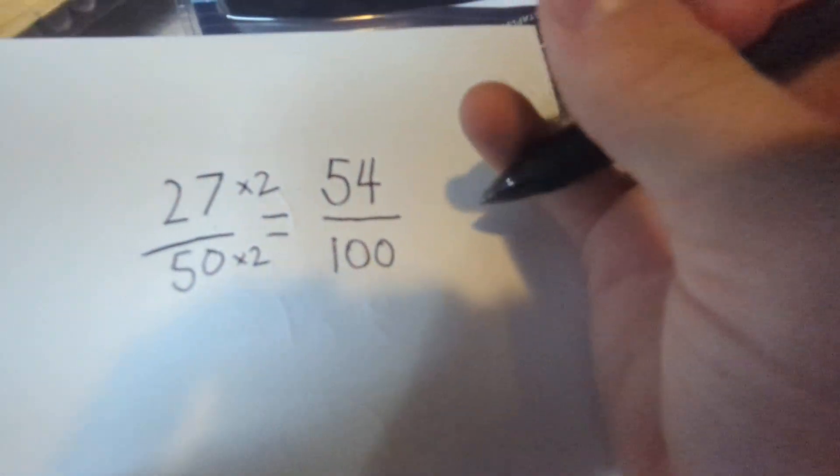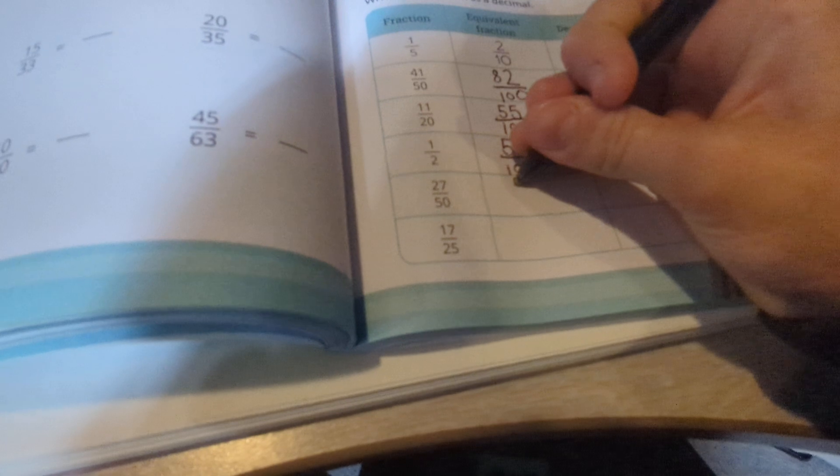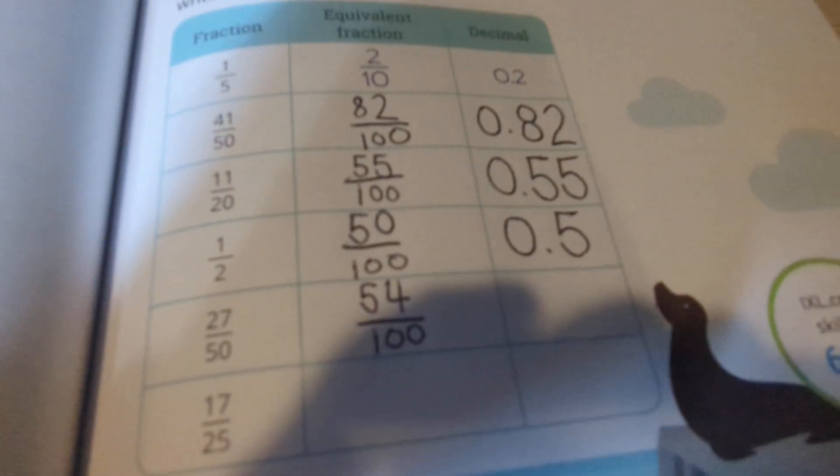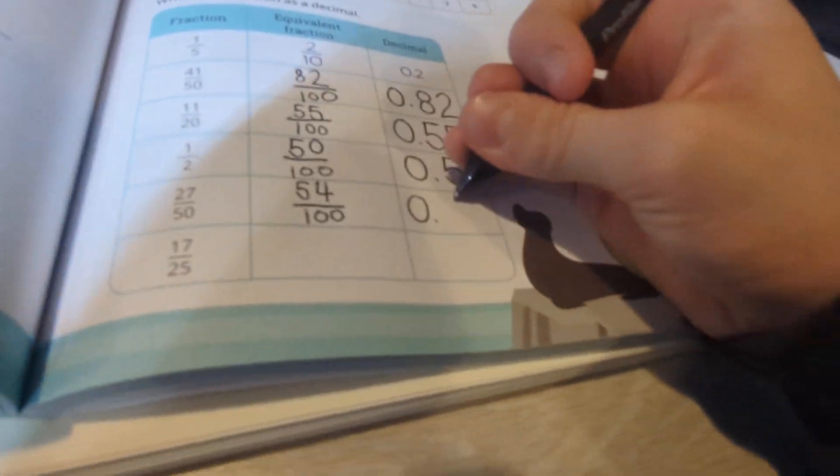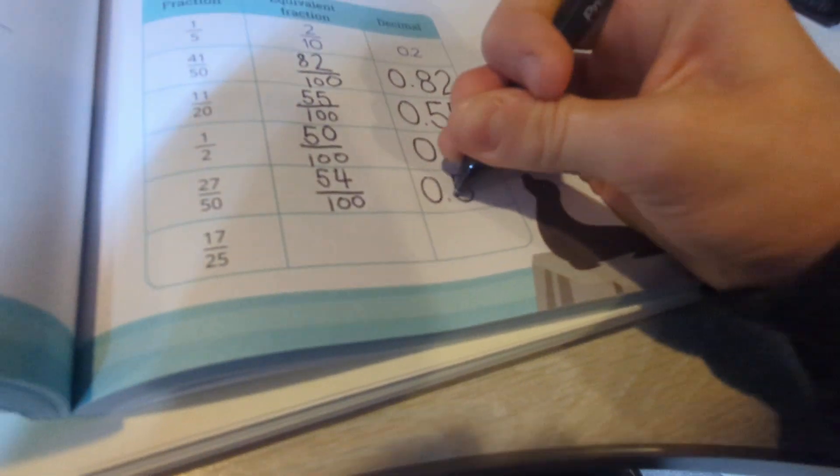You got 54 hundredths as your answer. So now I'm going to write 54 hundredths here and write it as a decimal. 0.54.